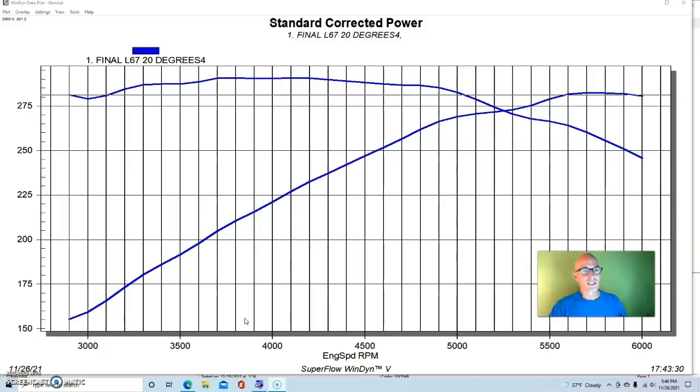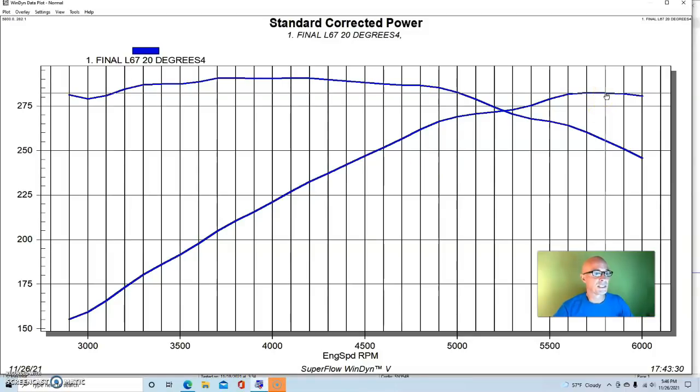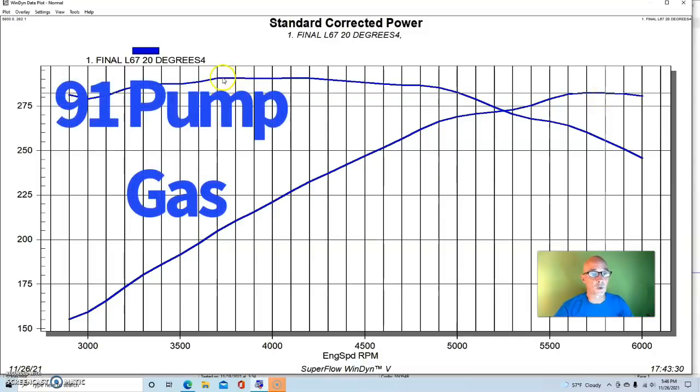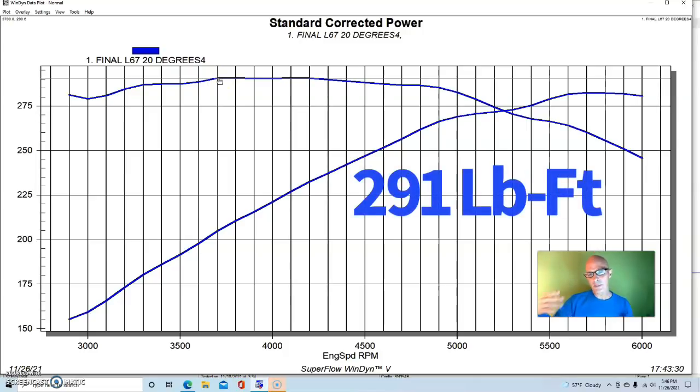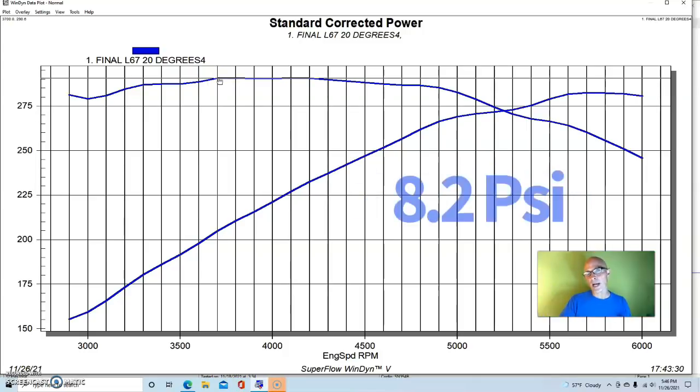So we ran the L67, and with the stock pulley, 3.8 inch pulley, and so equipped, the L67 produced 282 horsepower and 291 foot-pounds of torque.